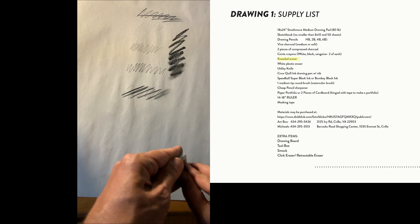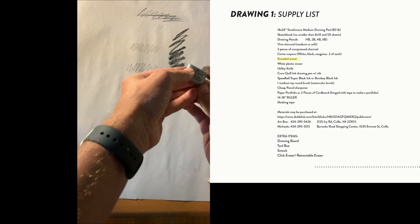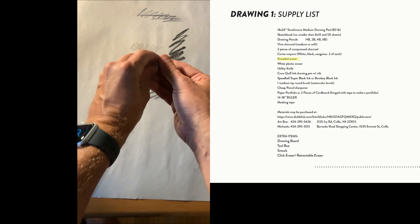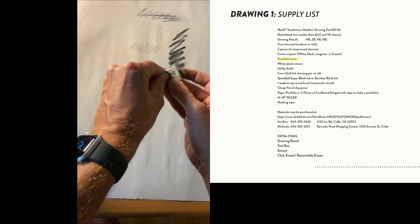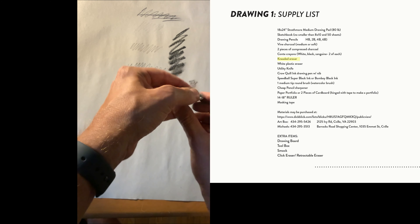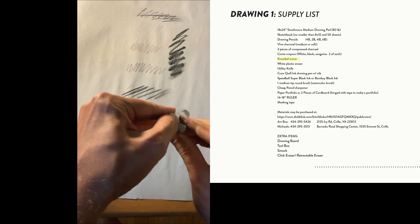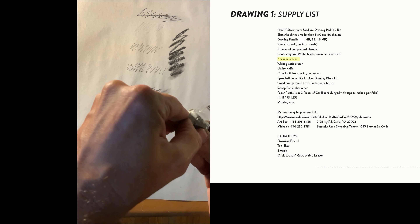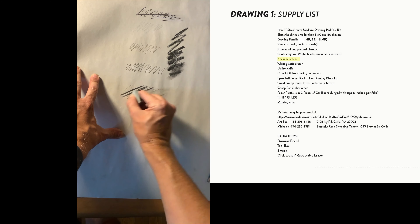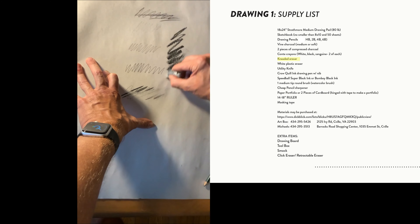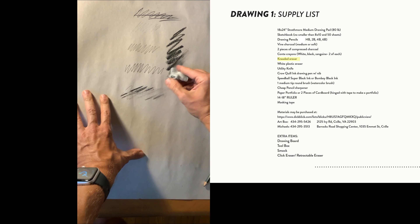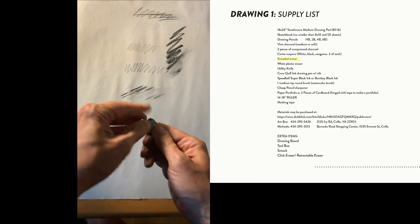Next is a kneaded eraser, which is different from a regular eraser — it looks like a gray piece of rubber or chewing gum. It allows you to pick up charcoal very effectively. When it gets dirty, you can physically knead it to renew its erasing surface, making it a really wonderful and long-lasting supply.